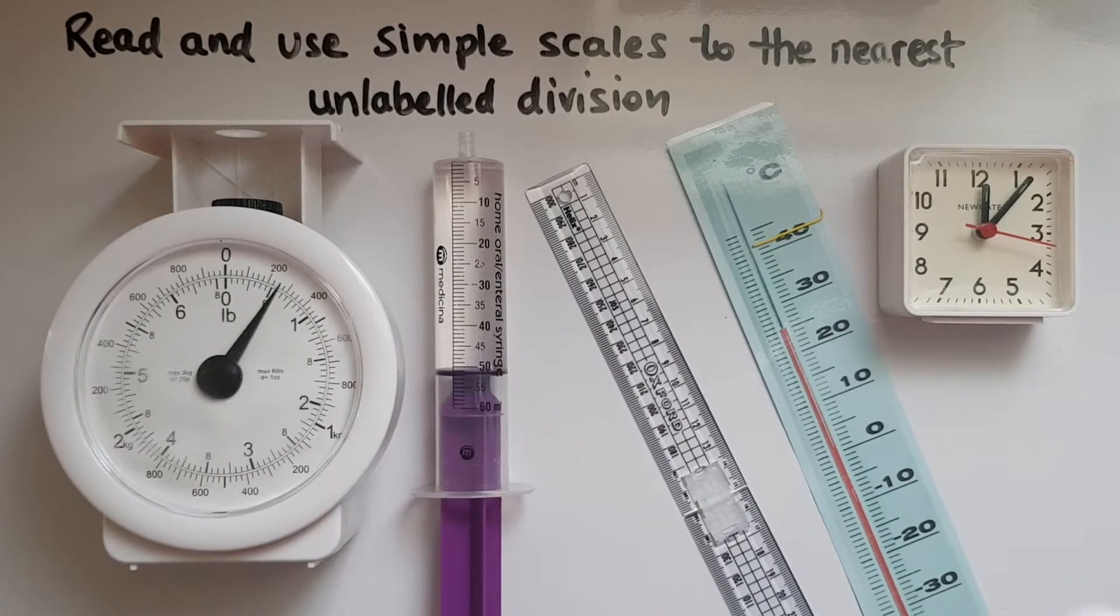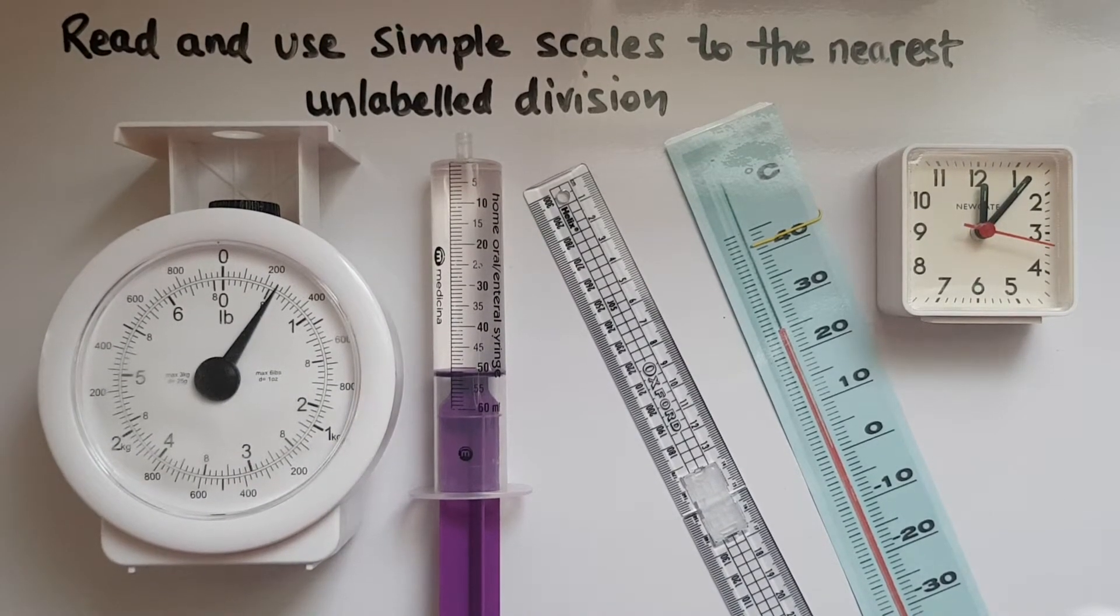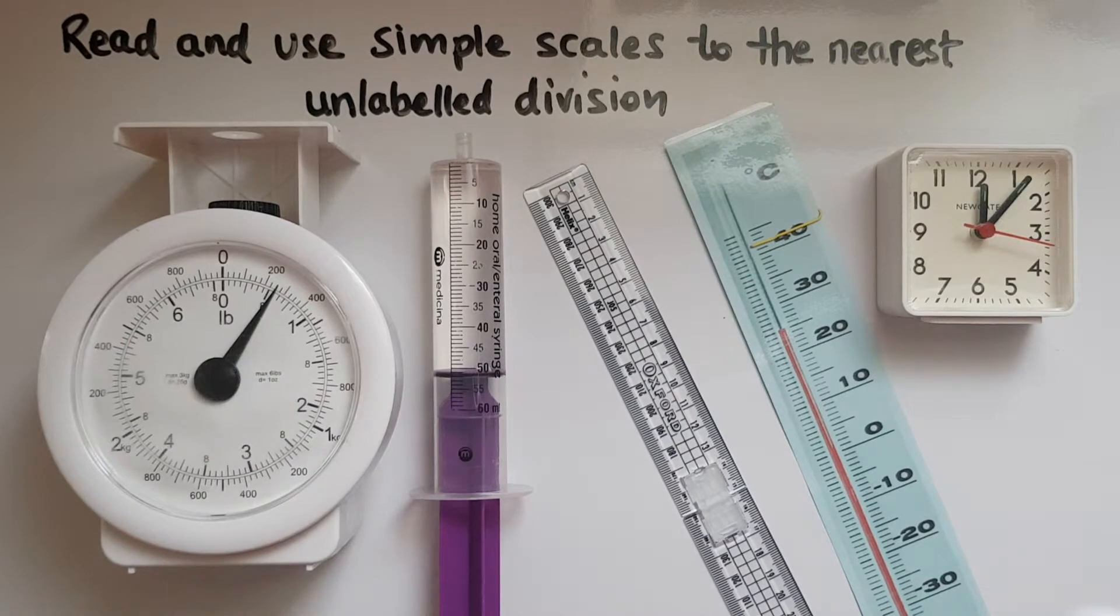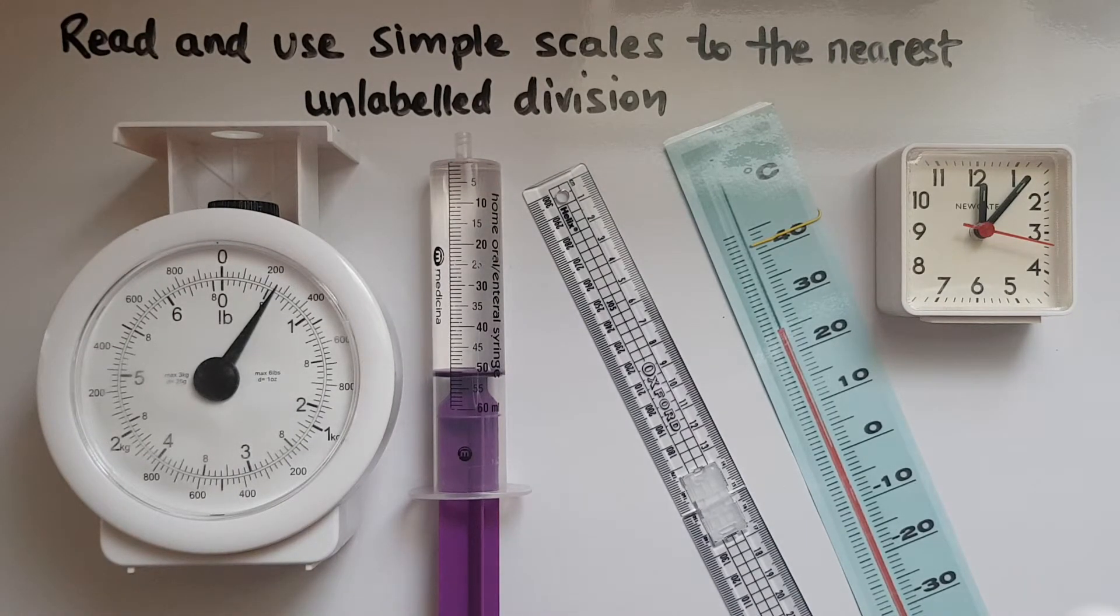So what does it mean to read a simple scale to the nearest unlabeled division? You didn't need to round it to the numbers that were given. Which one was it closer to? To the nearest 5 minutes maybe? To the nearest 5 degrees Celsius? To the nearest centimeter? But what you needed to do is to find out more accurately what the measurement is. So that means going into the unlabeled divisions and figuring out how much does each of them represent, where are we stopping? And that would be the measurement to the nearest unlabeled division.